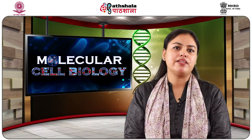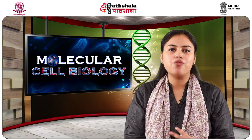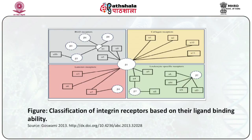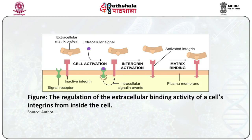The integrin family of receptors is classified into four categories: first, RGD-binding integrins which recognize arginine-glycine-aspartate sequences, including combinations such as alpha5-beta1 and alpha8-beta1; second, collagen-binding combinations; third, laminin-binding combinations; and fourth, leukocyte-specific integrin types. Binding of an extracellular ligand to integrin triggers a signaling cascade inside the cell, leading to activation of extracellular binding sites on integrins and making them receptive for cell adhesion.